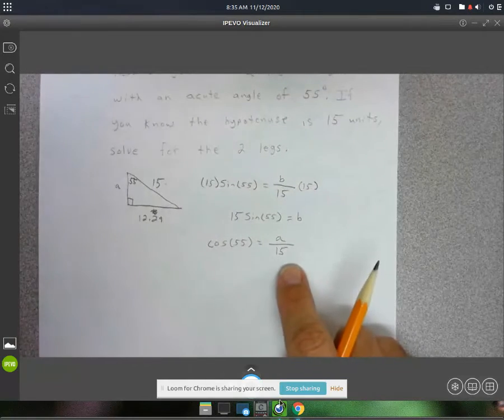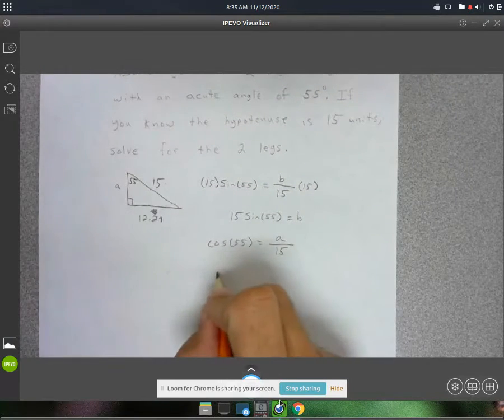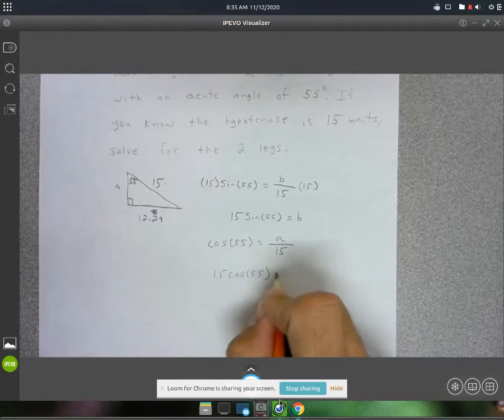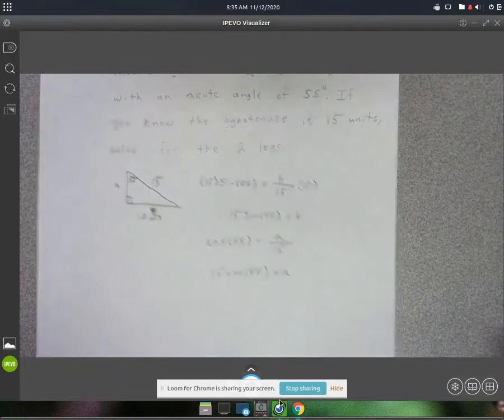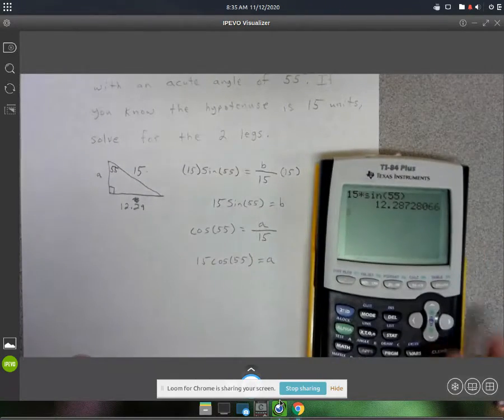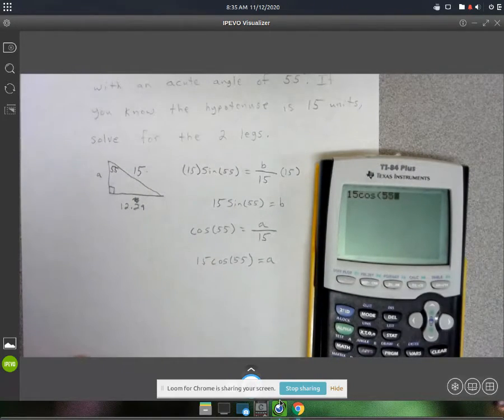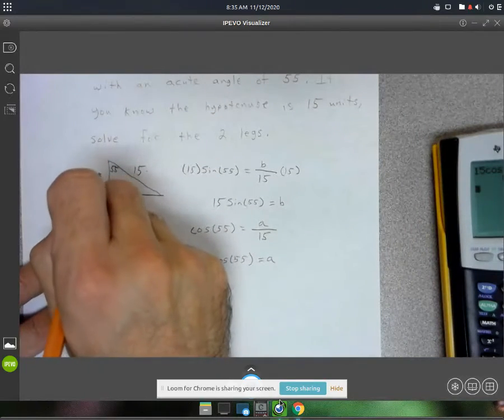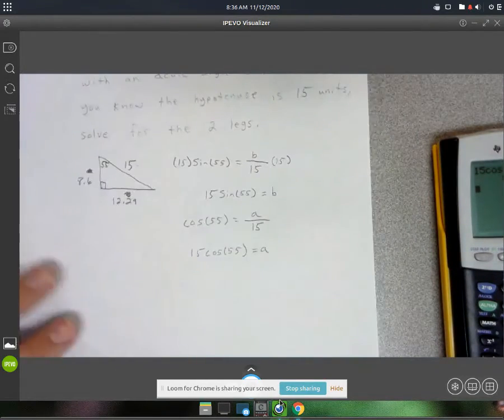To solve this, again you just multiply by 15. So you get 15 times cosine of 55 equals A. 15 cosine of 55 gives us 8.6. So A equals 8.6.